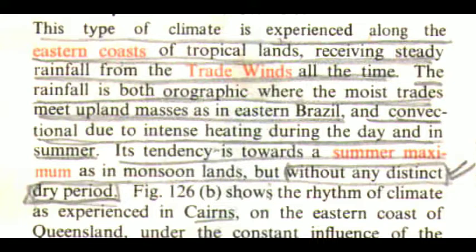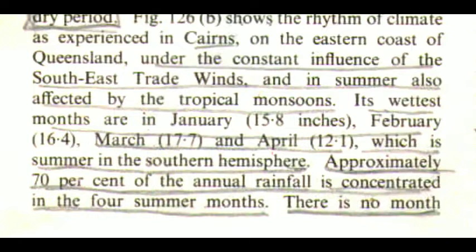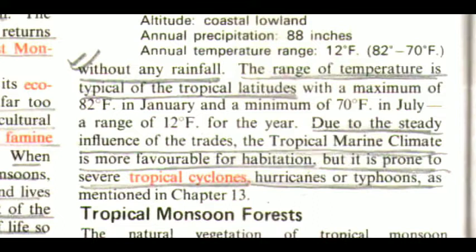Figure 126b shows the rhythm of climate as experienced in Cairns on the eastern coast of Queensland, under the constant influence of the southeast trade winds and in summer also affected by the tropical monsoons. Its wettest months are January at 15.8 inches, February at 16.4, March at 17.7, and April at 12.1 — which is summer in the Southern Hemisphere. Approximately 70% of the annual rainfall is concentrated in the four summer months, with no month without any rainfall. The range of temperature is typical of tropical latitudes, with a maximum of 82 degrees Fahrenheit in January and a minimum of 70 degrees Fahrenheit in July, a range of 12 degrees Fahrenheit for the year. Due to the steady influence of the trades, the tropical marine climate is more favourable for habitation, but it is prone to severe tropical cyclones, hurricanes or typhoons, as mentioned in chapter 13.